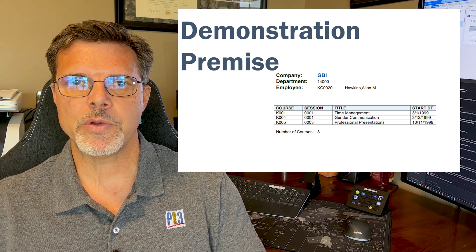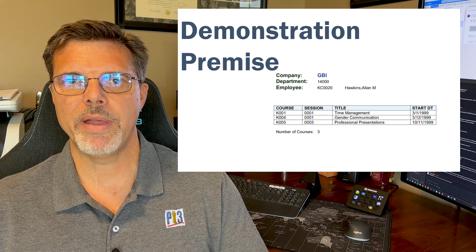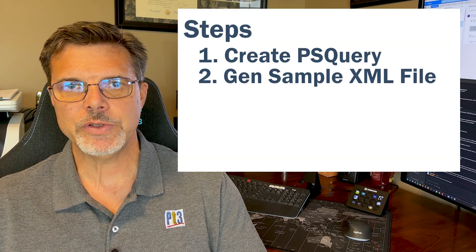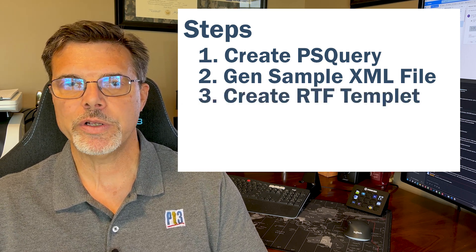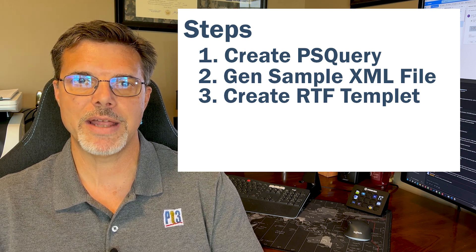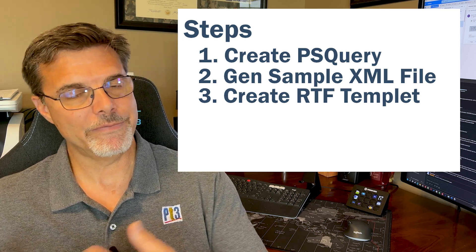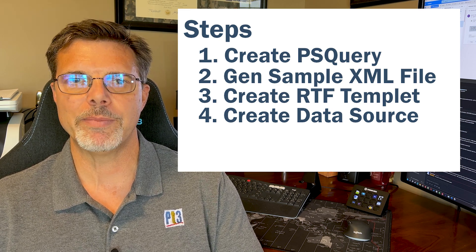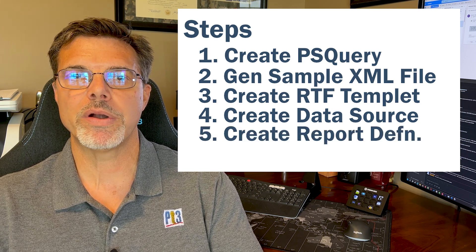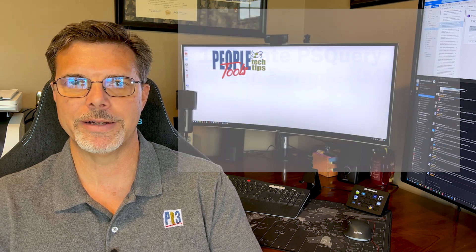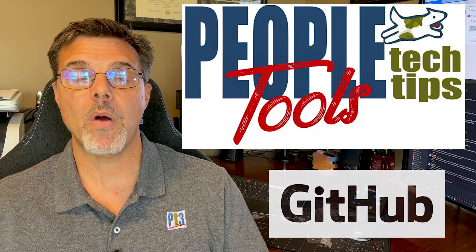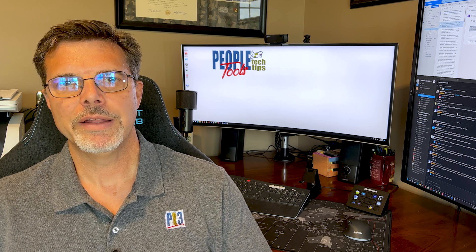We're going to find the classes employees have taken, run a query, and format it so we have one employee per page with their basic information such as name and company, and in a grid below that, the classes they have taken. The basic steps are: first, create a PS Query to extract the data we need. Then using that query, generate an XML file straight from the query tool. Then use that XML file within Microsoft Word using the BI Publisher desktop plugin and create our basic report, both a manual way and a very quick way. Once we have our BI Publisher report template created, we'll create the configuration inside of PeopleSoft to view that report. As always, the XML file and the report template seen inside this demo will be available on PeopleToolsTechTips.com and also our GitHub repository.